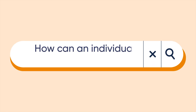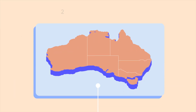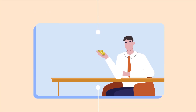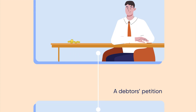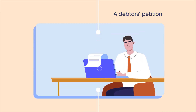How can an individual become bankrupt? There are two ways that an individual can become bankrupt in Australia. Firstly, an individual can voluntarily enter bankruptcy, which is known as a debtor's petition. To do this, the individual must complete and submit a bankruptcy form with the Australian Financial Security Authority.